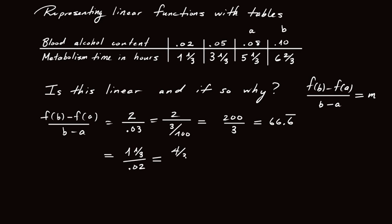Okay, so let's work on this. 1 and 1 third is the same as 4 thirds. 0.02 is the same as 2 one-hundredths. If we invert and multiply, we get 100 over 2 times 4 thirds. And that's the same as 4 hundredths over 6, which is the same as 200 over 3, by simplifying the numerator and denominator, which is the same as what we had before.